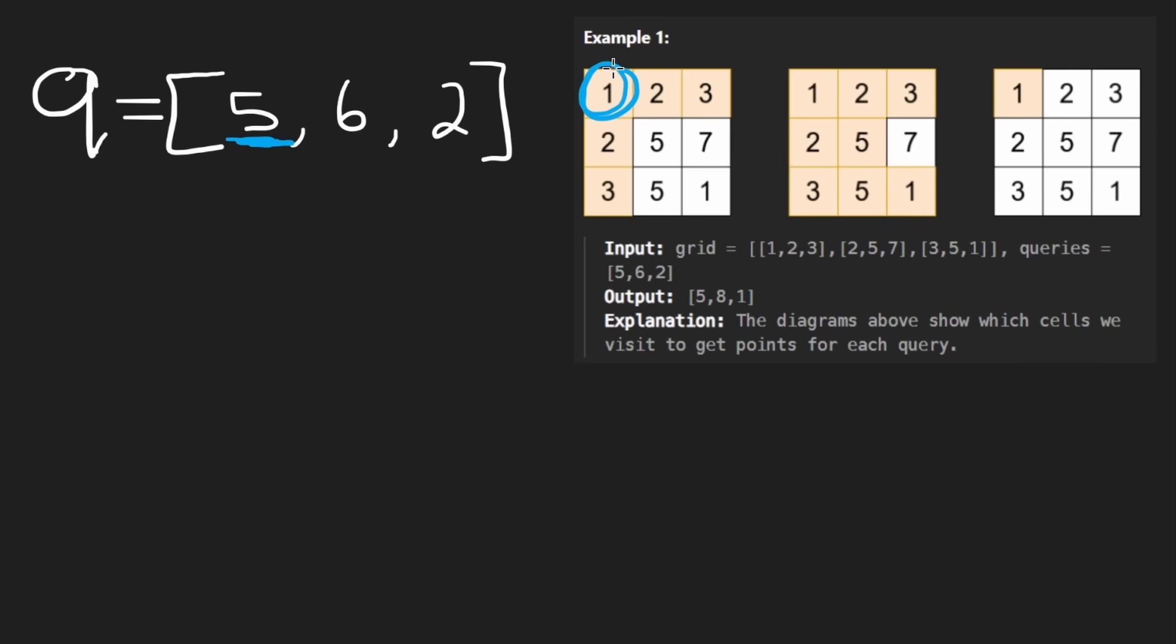We're basically allowed to do a traversal on this grid. We are allowed to revisit the same values multiple times. But the catch is that we are only allowed to visit cells that have a value strictly less than this query, not equal, but less than the query. So here we start at one. So maybe we go down here to two. We can't go right because that's a five. But maybe we can go down to three. Then maybe we go back up because we can't really go anywhere anymore.